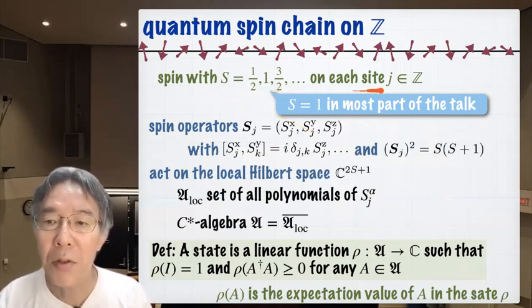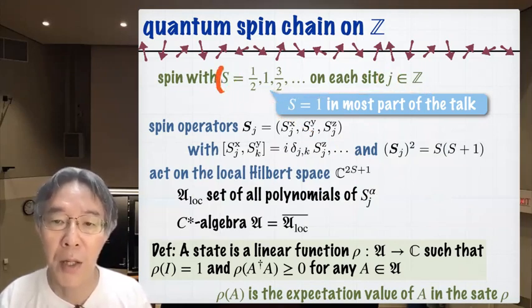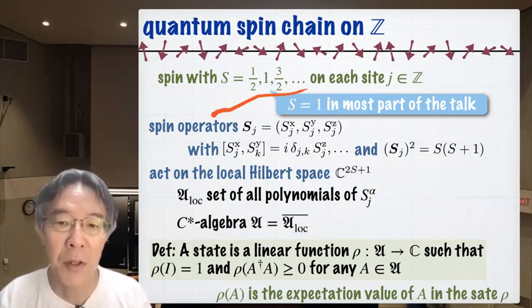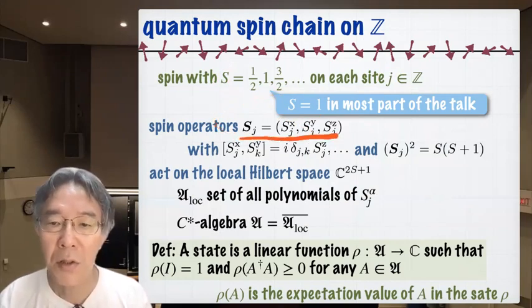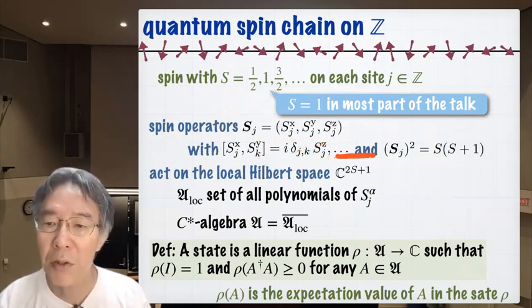On each site j of the infinite chain, I have a quantum spin with spin quantum number S. In most of this talk I consider a spin-1 system, but for the moment let S take a general value: one-half, one, three-half, and so on. These are the usual spin operators — X, Y, and Z components — satisfying the familiar commutation relations. And S squared equals S(S+1), which is a constant.